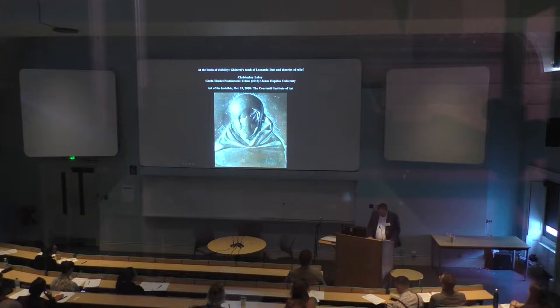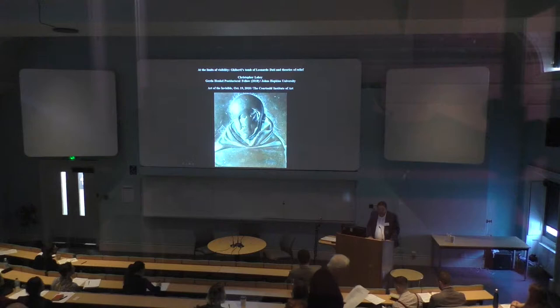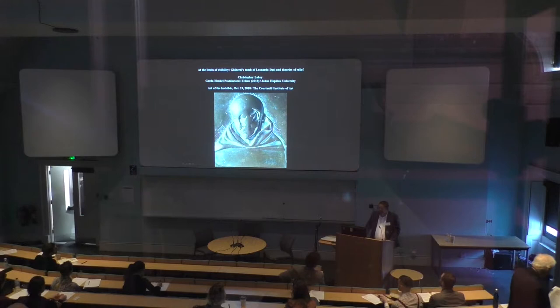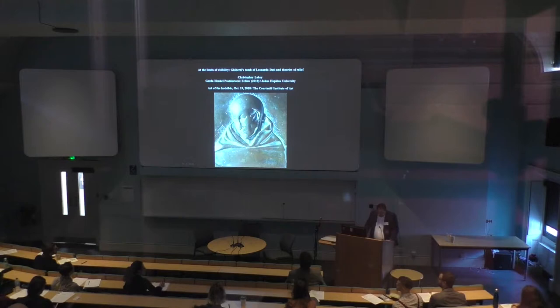One such phrase, 'le sottili sculture,' appears numerous times. Ghiberti draws for these subtle sculptures on Ibn al-Haytham — better known in Latin as Alhazen — and Vitello, whose writings were important sources for the science of optics and the aesthetics of vision in the later Middle Ages and early Renaissance, and in which the concept and aesthetics of relief appeared frequently. The major question this paper raises is: how can we understand Ghiberti's knowledge of medieval optical theory and how it affected his artistic production?